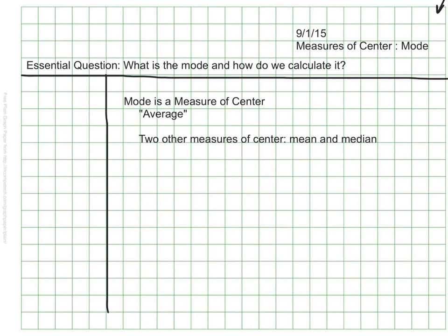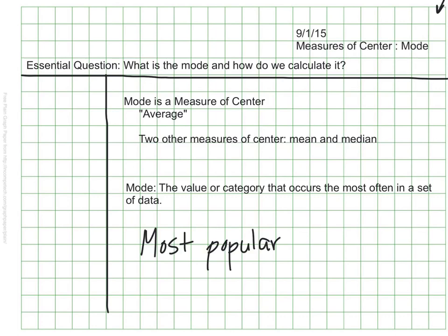The mode is the value or category that occurs the most often in a set of data. Do you ever eat pie à la mode? It's very popular. Mode is the data point that is the most popular. That is, it occurs the most often. Most starts with the letters M-O and so does mode. That's one way I remember that the mode measures what is most popular.